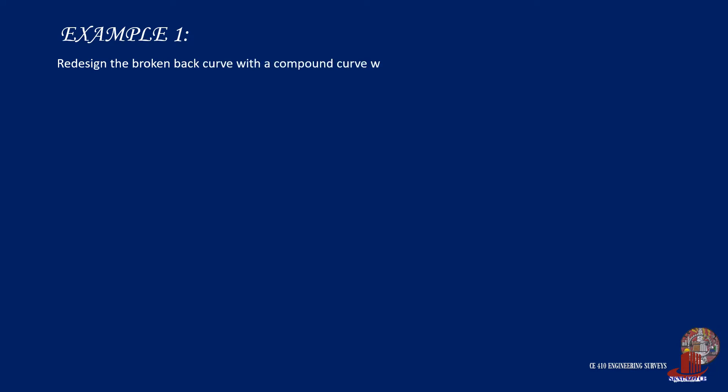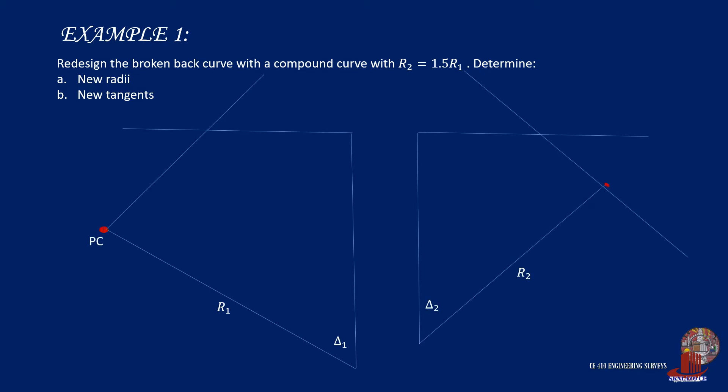In the example, we are asked to redesign a broken back curve with a compound curve with proportionality R2 equals 1.5R1. Determine the new radii and the new tangents. Tangents and central angles of the simple curves are given, including the distance of the short tangent joining them.